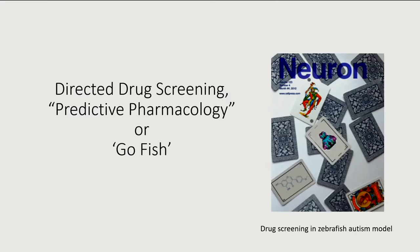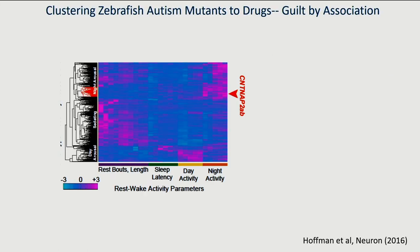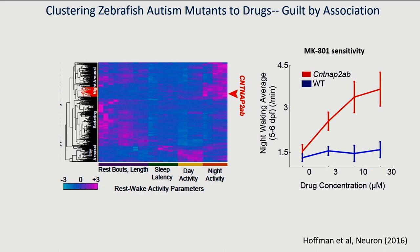We used an approach we called directed drug screening, or predictive pharmacology — also called 'Go Fish' after the card game — where we matched the autism mutant's behavioral output to the drug landscape from our screen. Clustering the CNTNAP fish into that drug data landscape, we asked which drugs land near CNTNAP. Those turned out to be NMDA antagonists. This is predictive: giving NMDA antagonists to CNTNAP fish makes them extremely hyperactive in synergy, even at doses that have almost no effect in wild type.